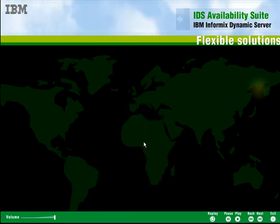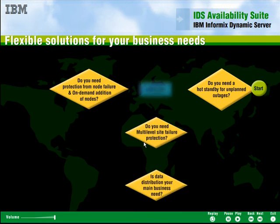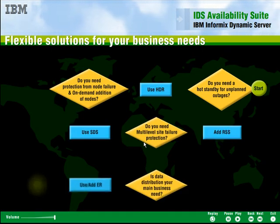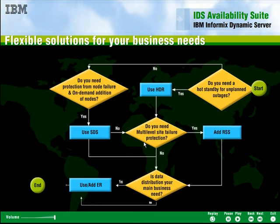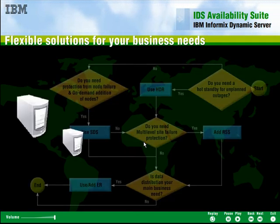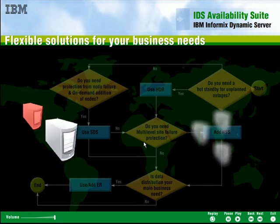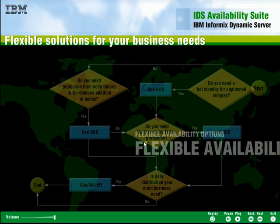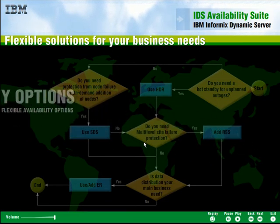IBM Informix Dynamic Server, or IDS, provides several high availability offerings to drive maximum business value and fully leverage your hardware and software investments. Whether you need a single standby backup for unplanned outages or a highly scalable cluster of servers, IDS provides flexible availability options to meet your specific business needs.